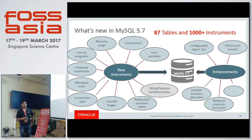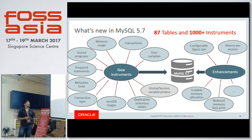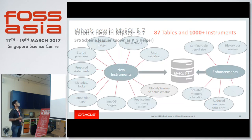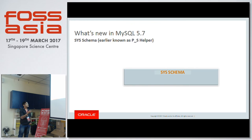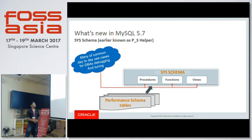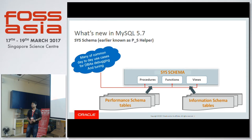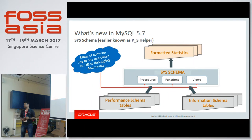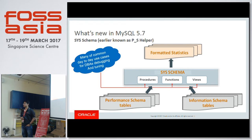In MySQL 5.7 GA we have 87 tables in Performance Schema storing server statistics, and 1000+ instruments monitoring activities. We also introduced sys schema — a collection of procedures, functions, and views representing common DBA use case scenarios. It takes information from Performance Schema and information_schema, formats it nicely, and presents it to the user. It was previously known as PS Helper and has received very good feedback.